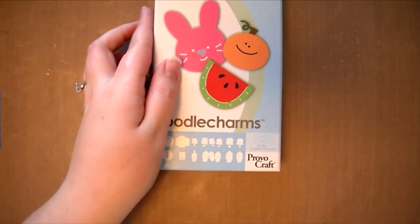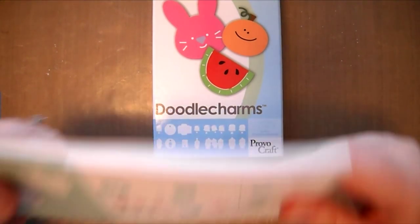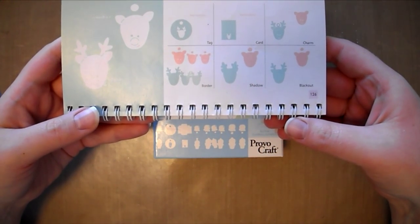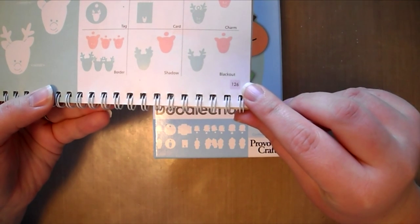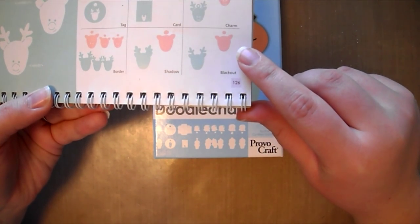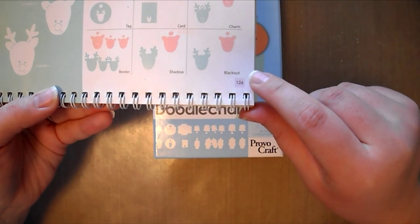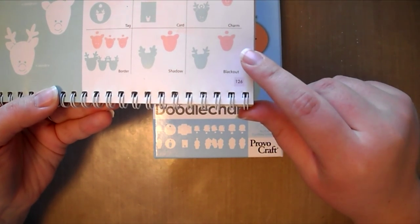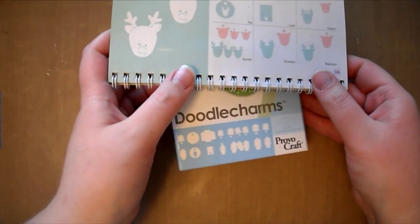First off, you're going to want to find a reindeer image. This could be a stamp, die cut, or even a sticker. I chose to use the reindeer image from the Doodle Charms Cricut cartridge, which is found on page 126 of the handbook. I decided to use the blackout feature so that I could later add my own facial features to my reindeer.